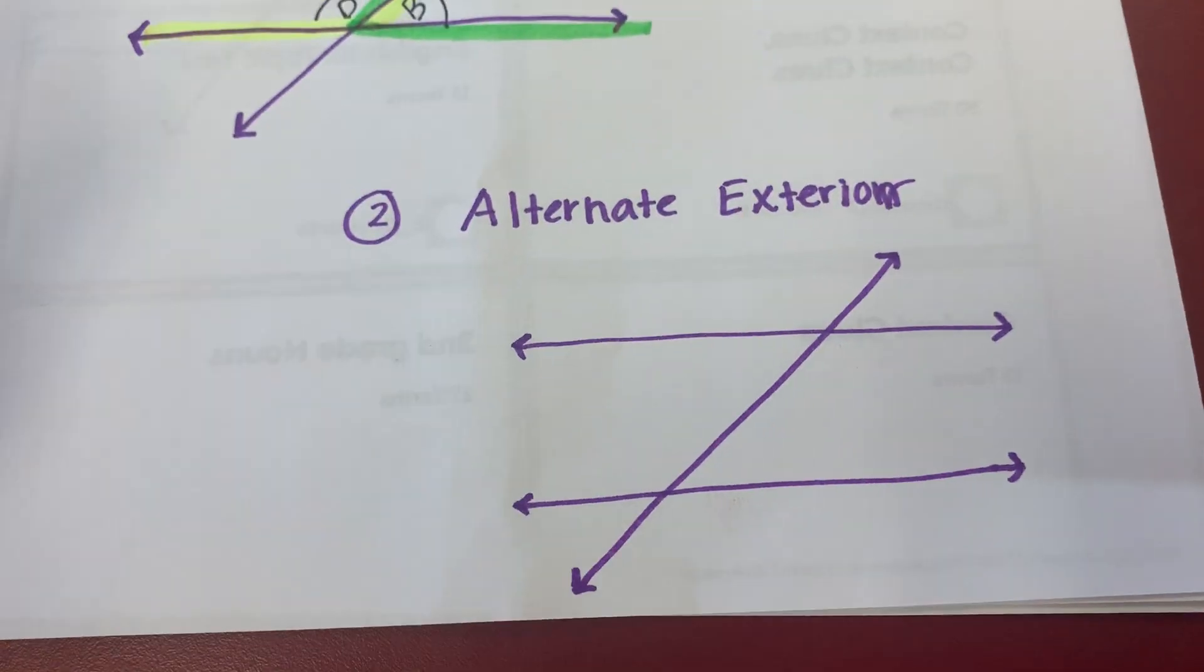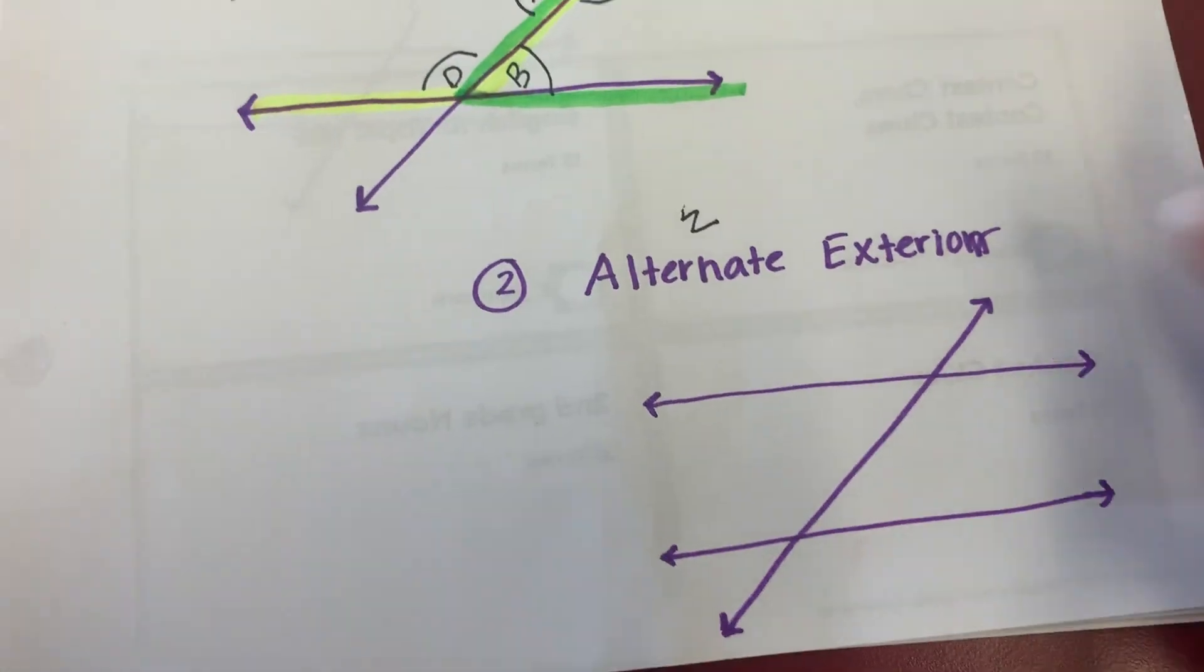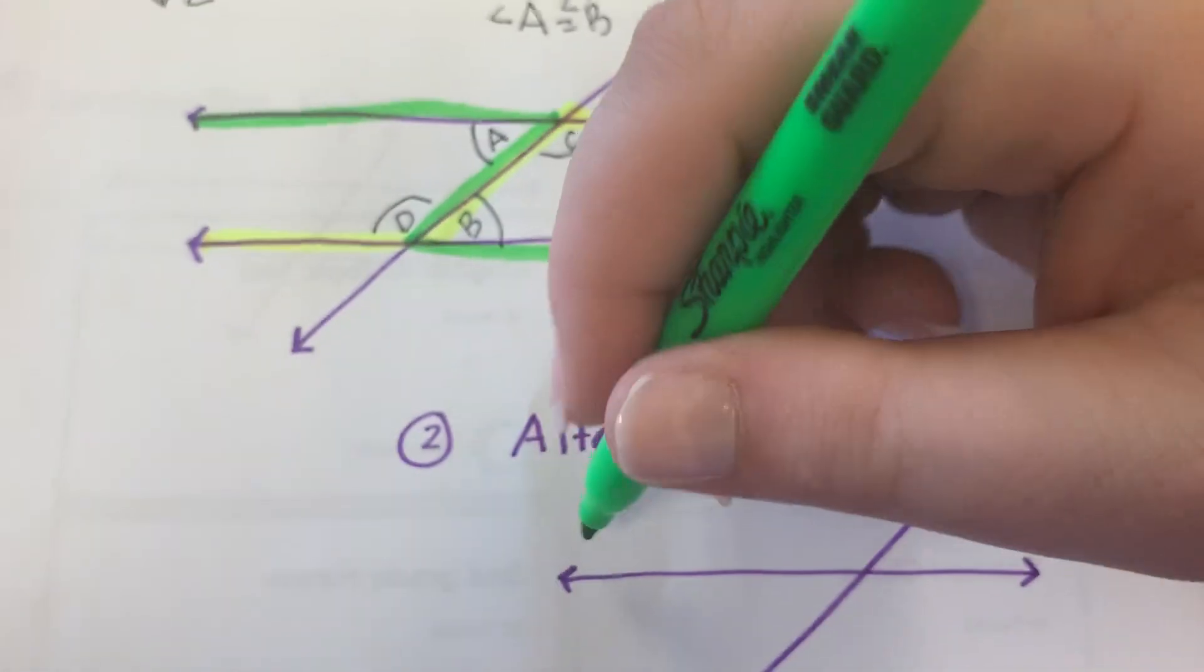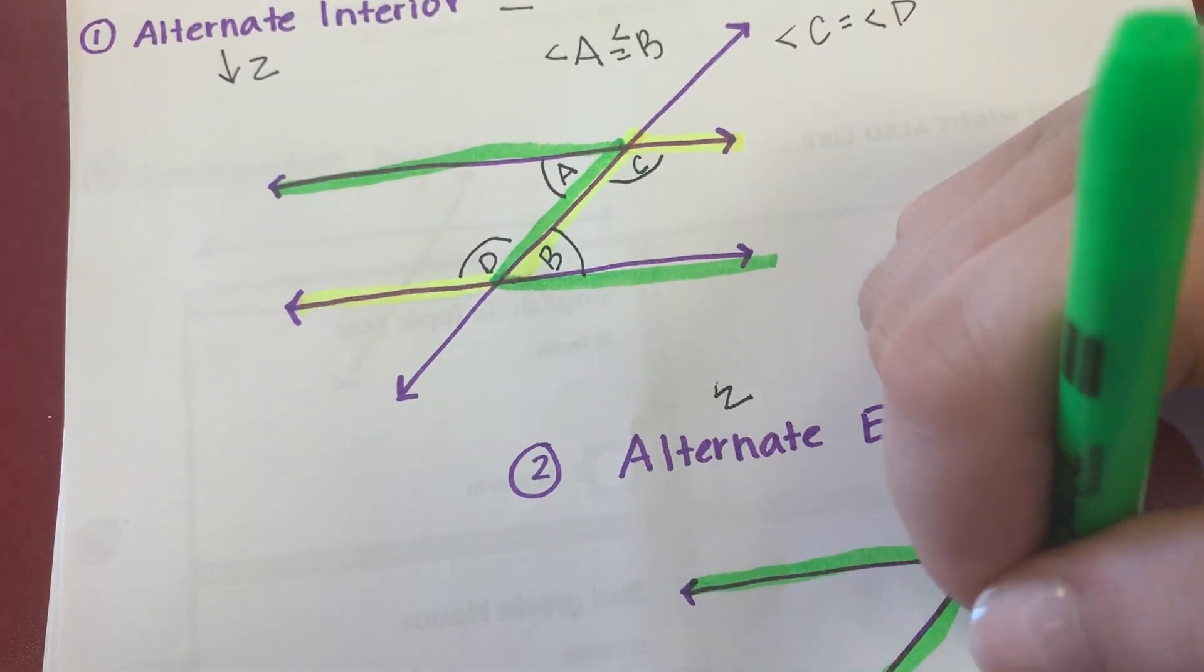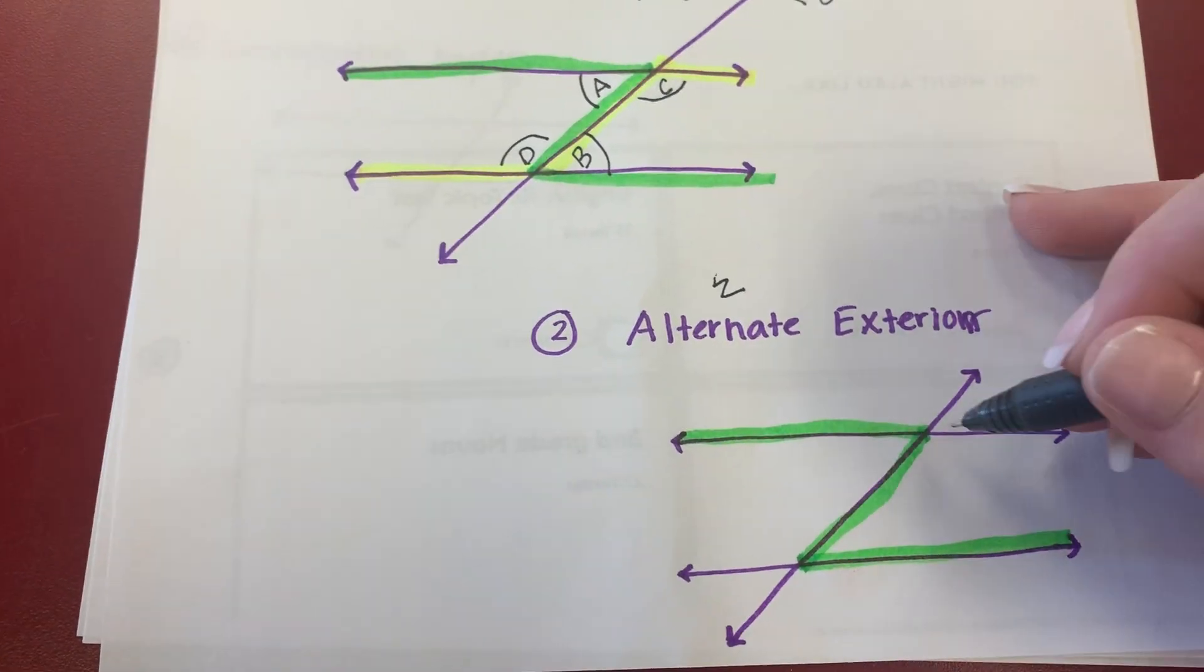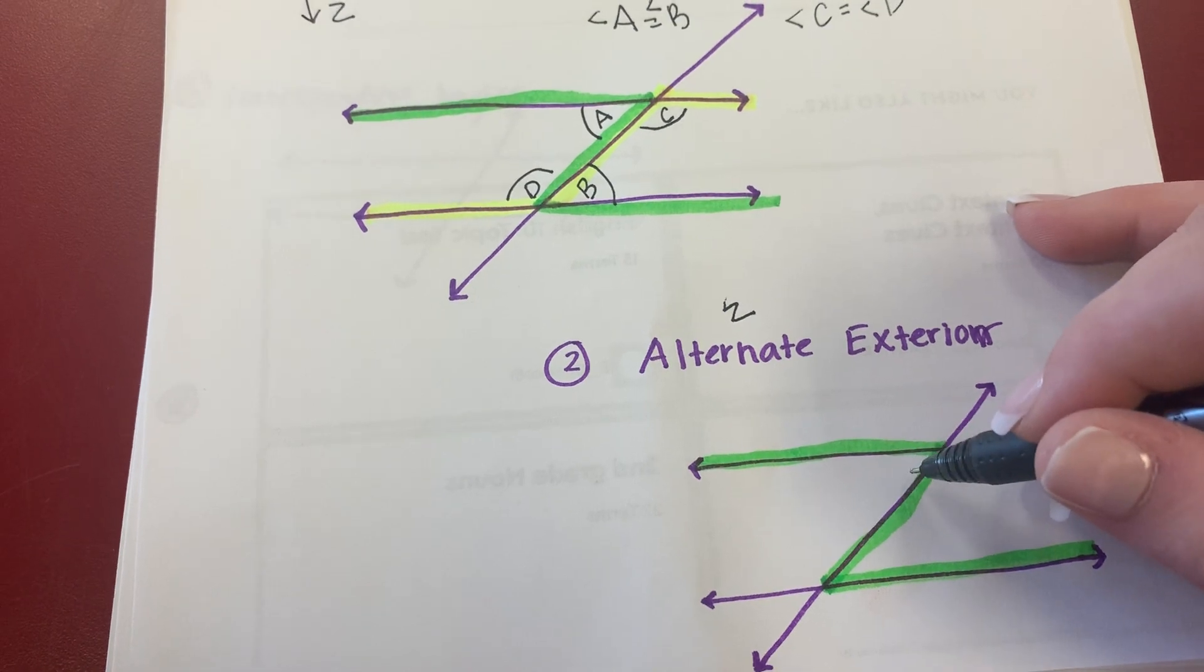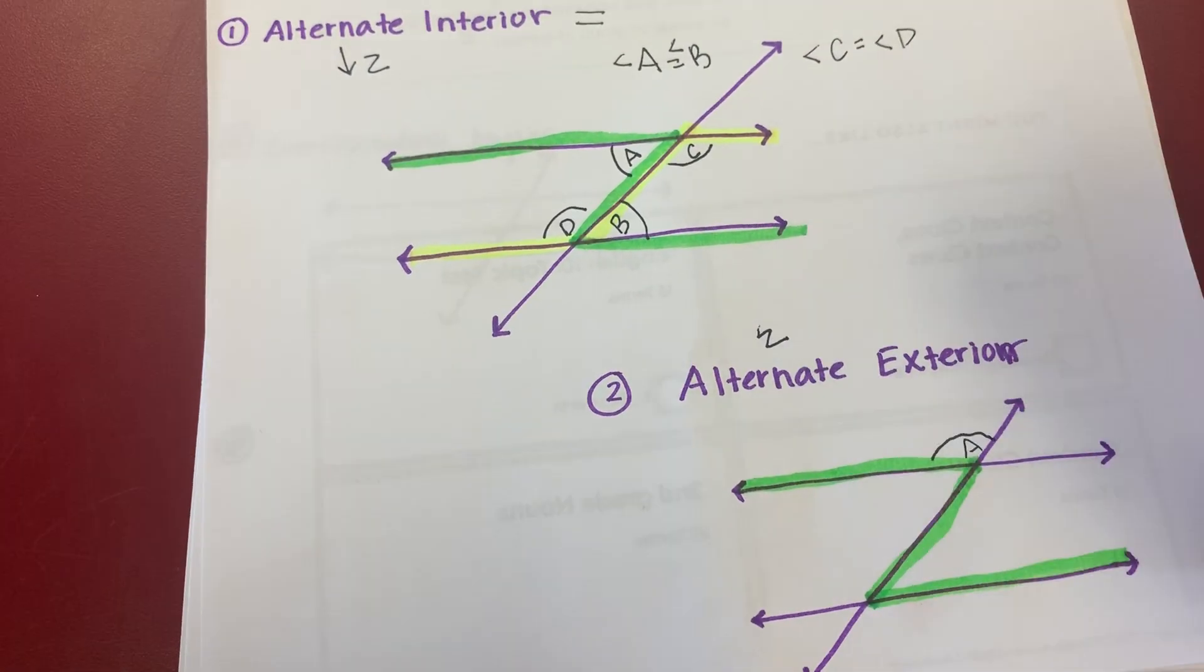And we're going to look at alternate exterior. I still see the word alternate, so I'm still going to draw my Z. Let's go ahead and draw my first Z. I'll draw what a regular Z looks like. But this time, I'm looking at the outside. So if I look here, that's interior. Where's my exterior? There. So I have angle A there.